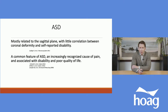In terms of adult spinal deformity, it is mostly related to the sagittal plane. There is little correlation between coronal deformity and self-reported disability. Going back to the cone of economy: when patients were asked about their level of pain, this correlated more strongly with sagittal plane deformity than coronal deformity. Scoliosis in the coronal plane didn't have as high an incidence of reported disability and pain, though both can commonly exist in one patient.